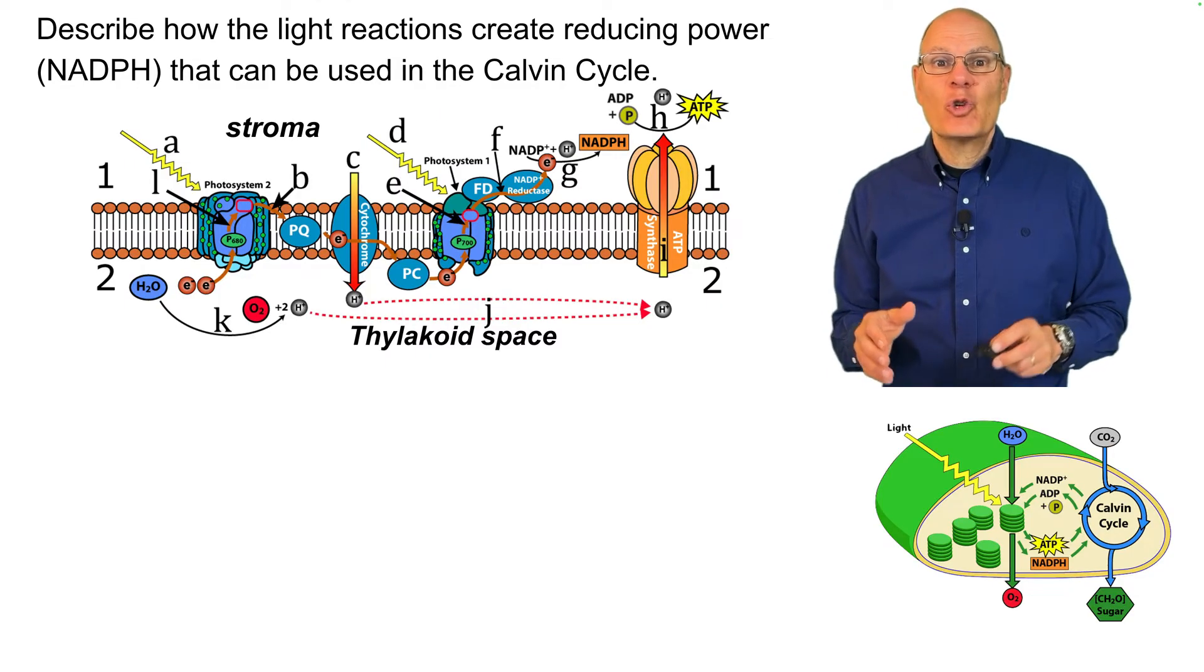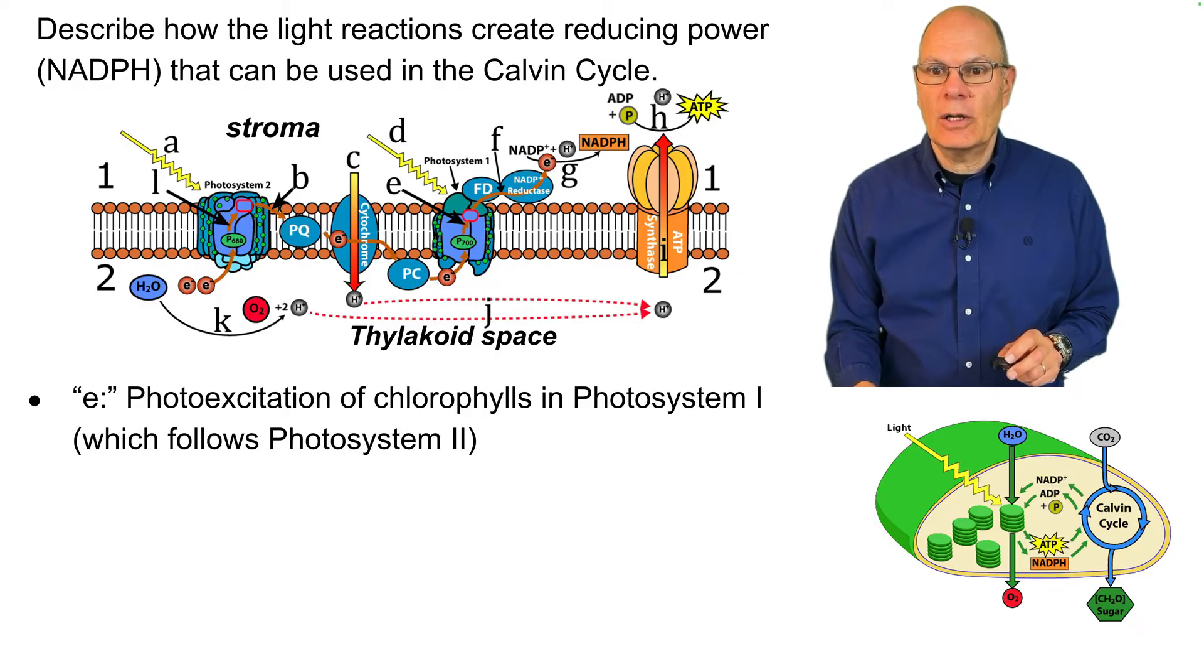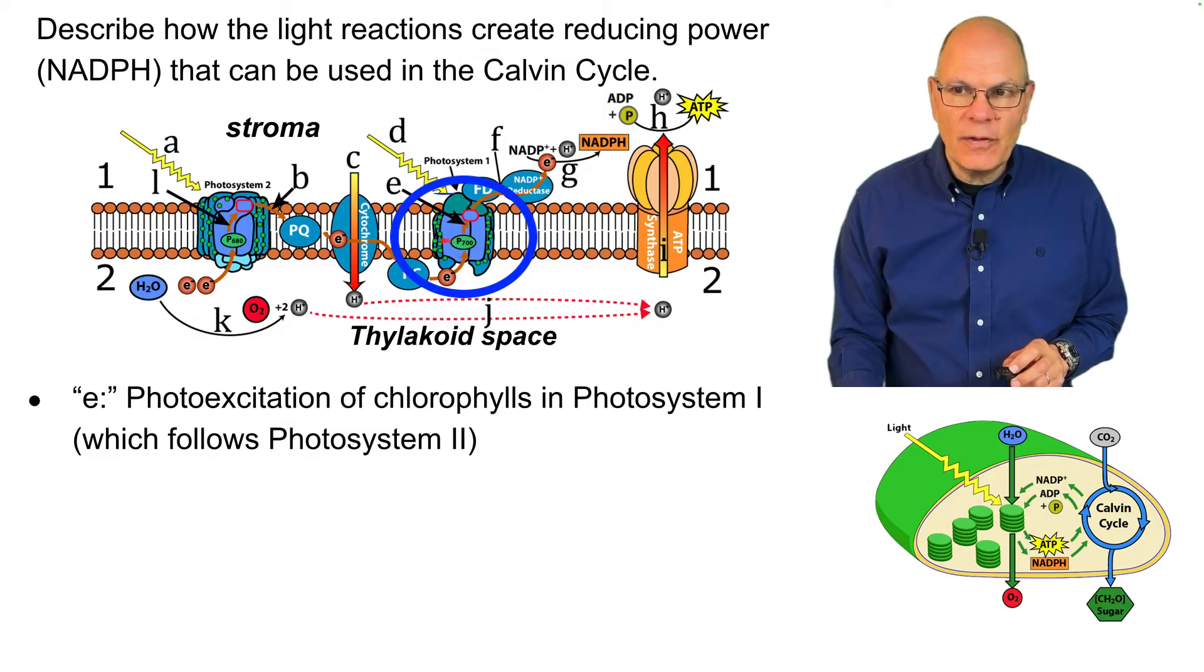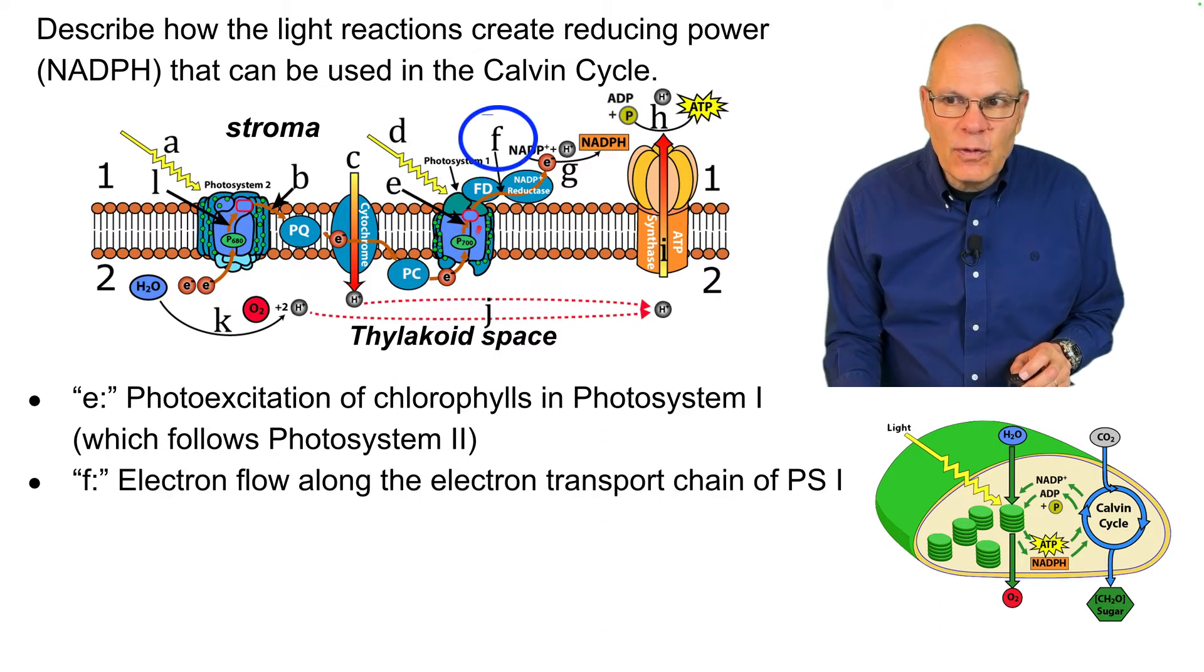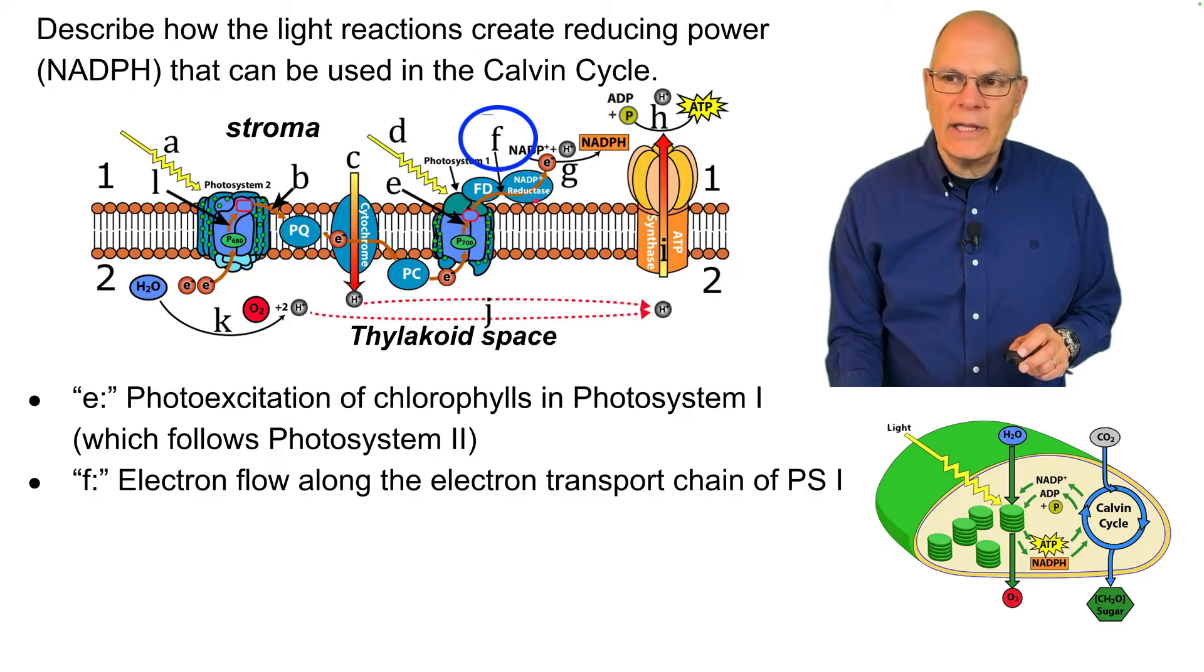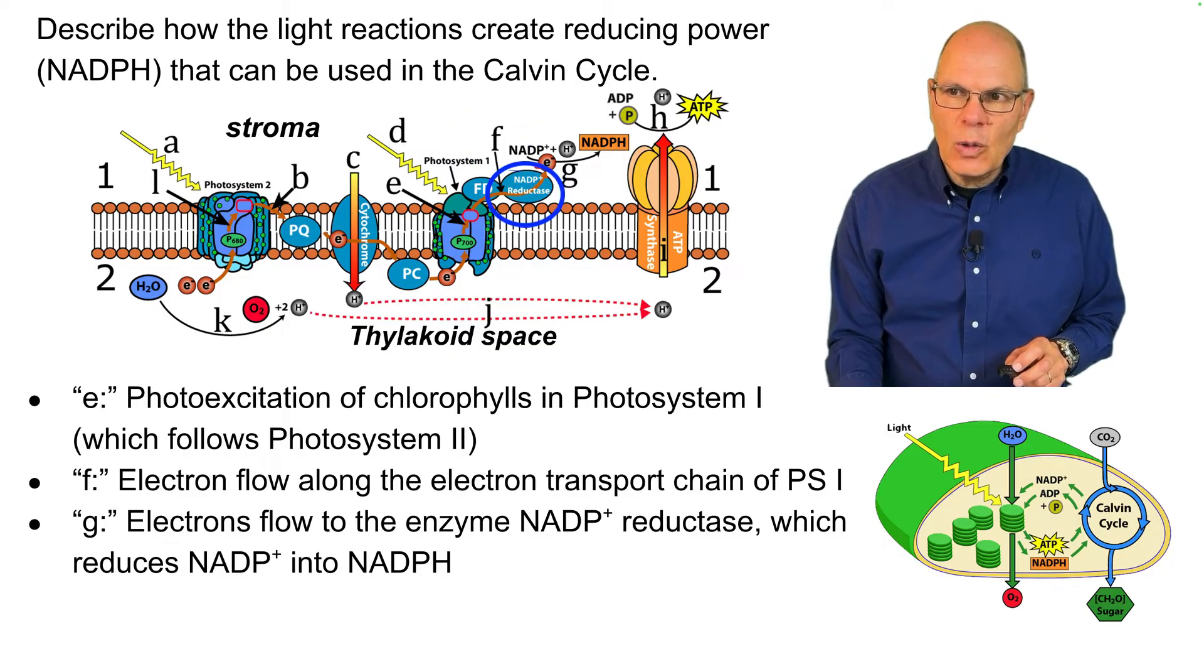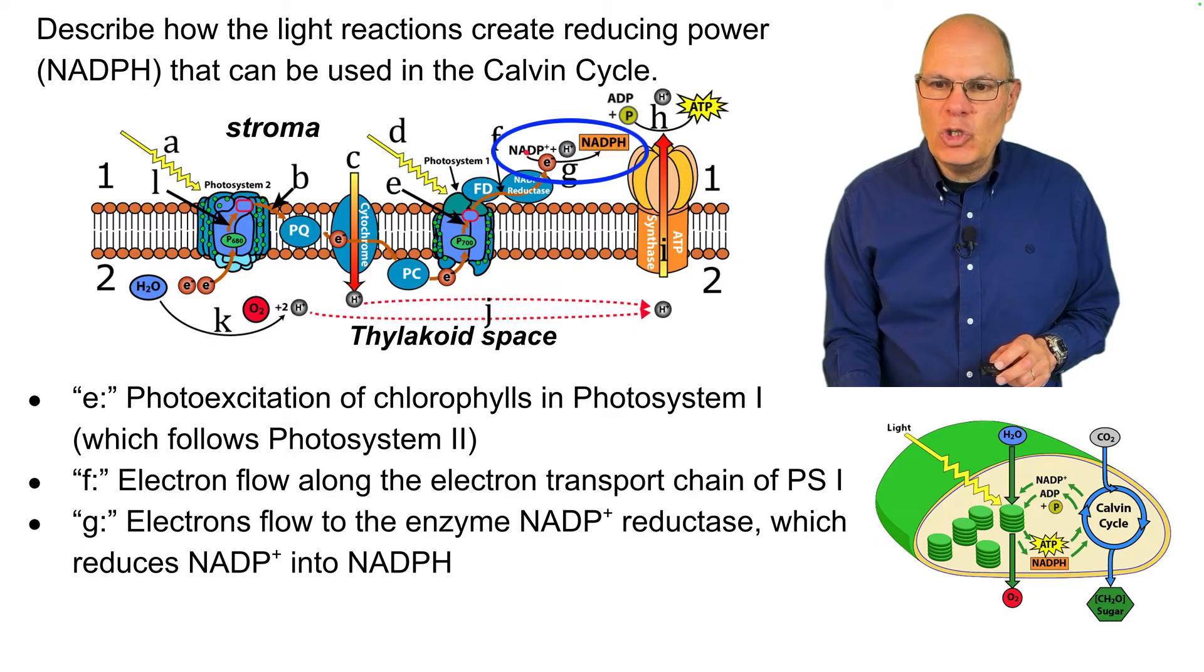Describe how the light reactions create reducing power, NADPH, that can be used in the Calvin cycle. We're going to start over here. We're looking at photosystem I. Photo excitation of chlorophylls in photosystem I is how the process starts. That creates a flow of electrons that's flowing through the electron transport chain of photosystem I. And over here, those electrons flow to this enzyme. It's called NADP plus reductase. And that reduces NADP plus into NADPH.